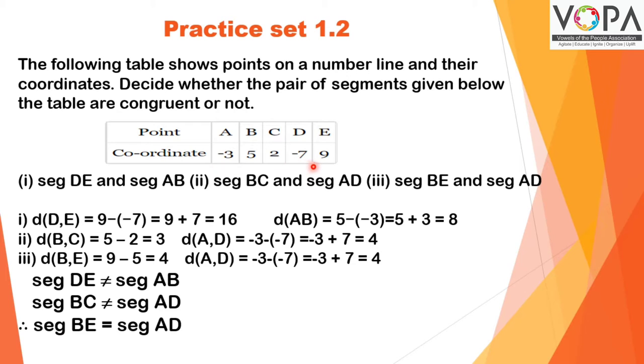(i) Segment DE and segment AB. d(D,E): D is -7 and E is 9. As 9 is greater than -7, we write 9 - (-7) = 9 + 7 = 16.